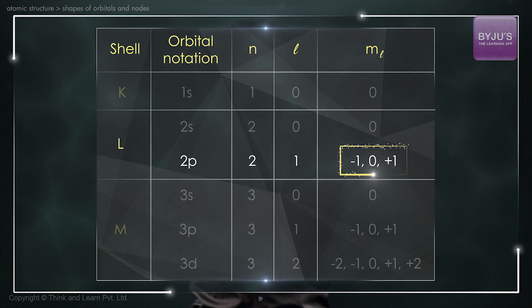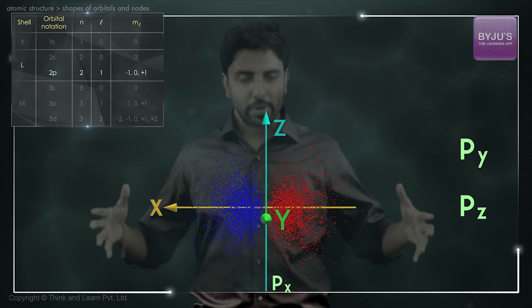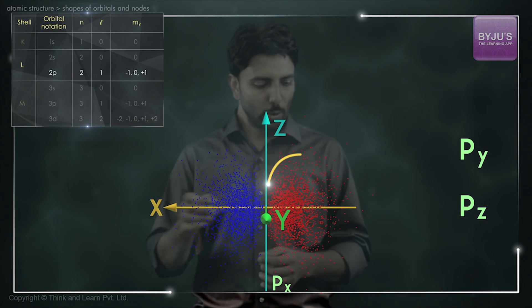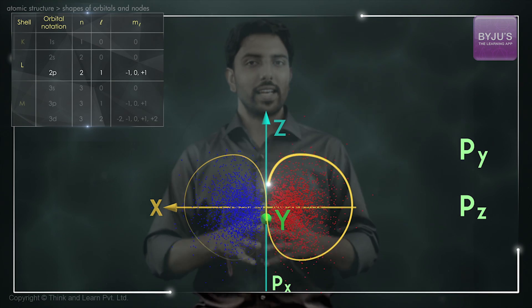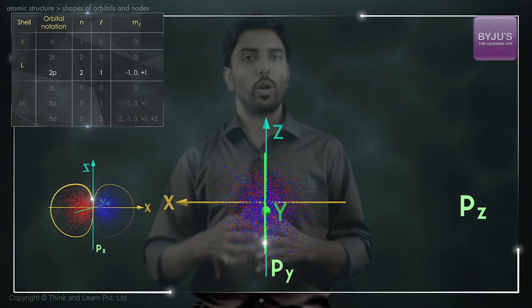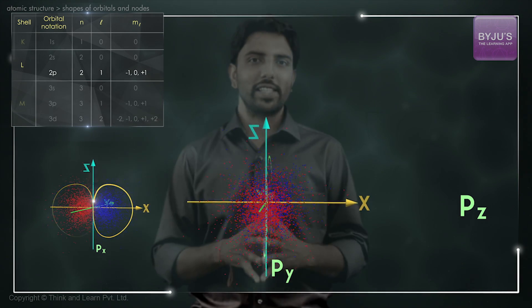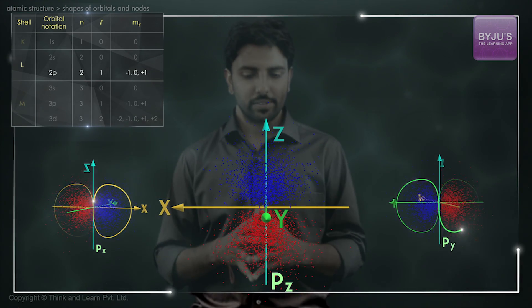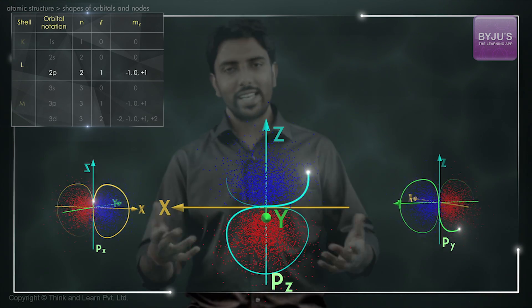The three different orbitals are the px, py, and pz orbitals. The px orbital is oriented along the x-axis, the py along the y-axis, and the pz orbital is oriented along the z-axis.